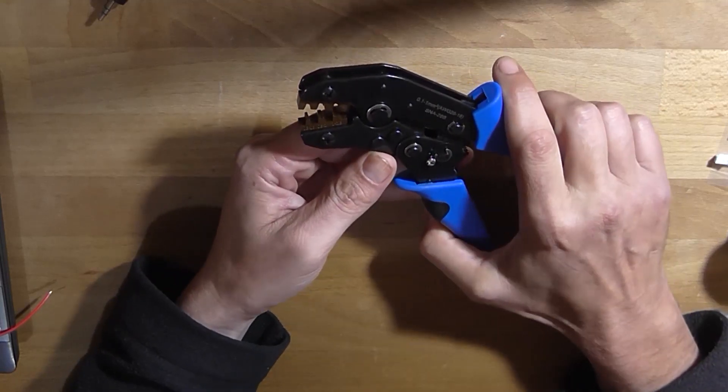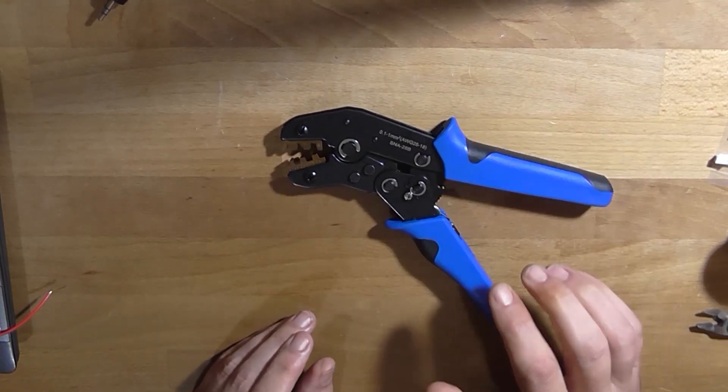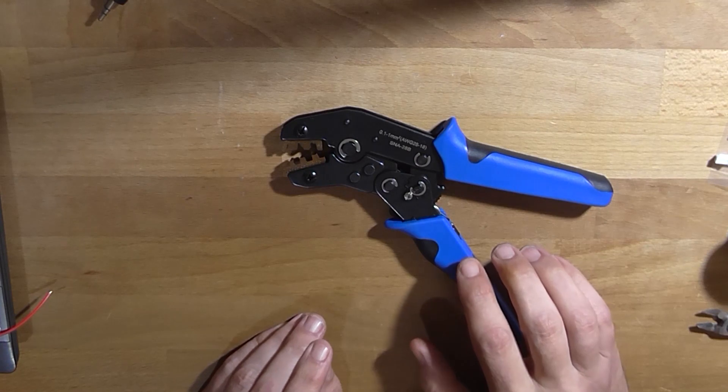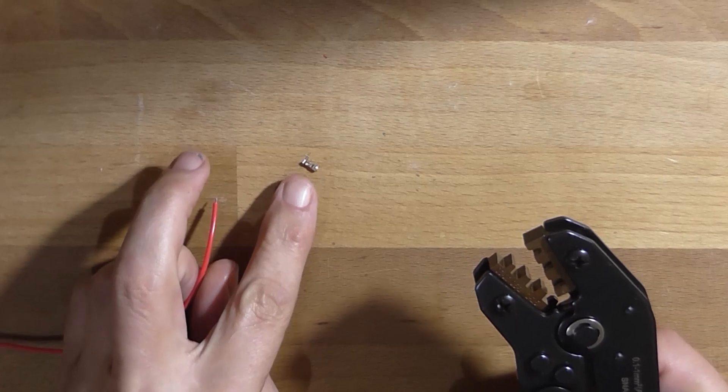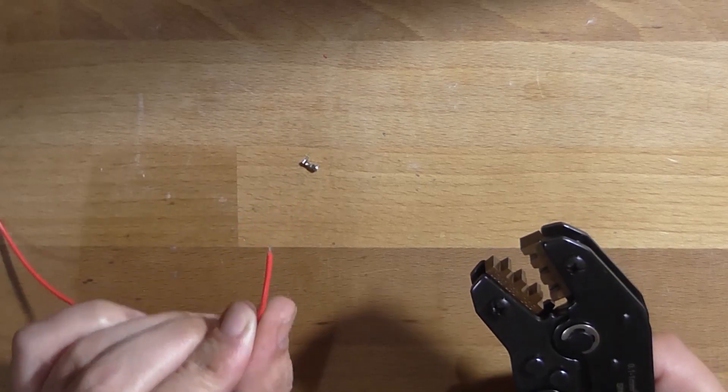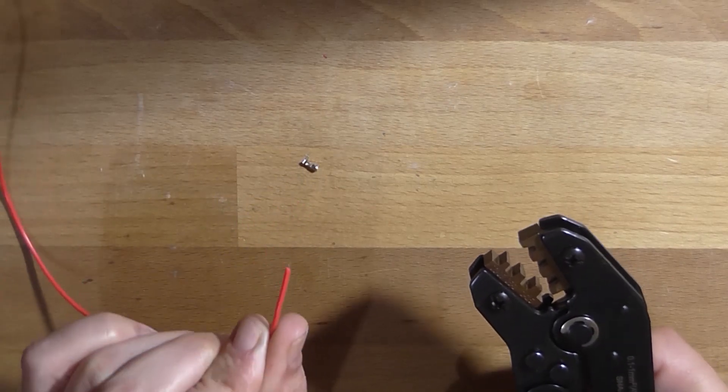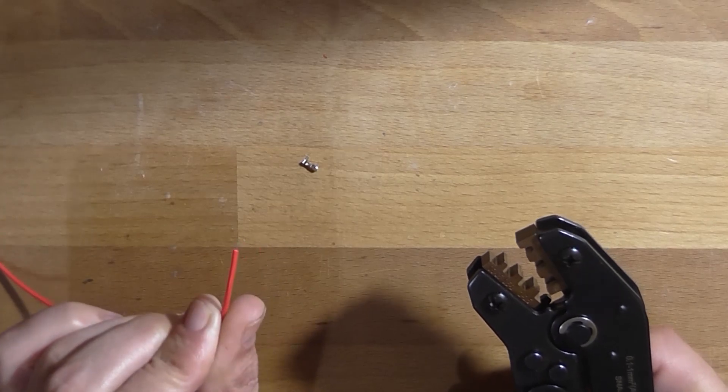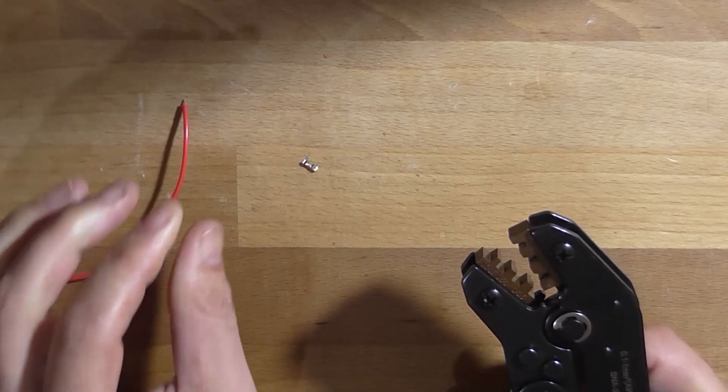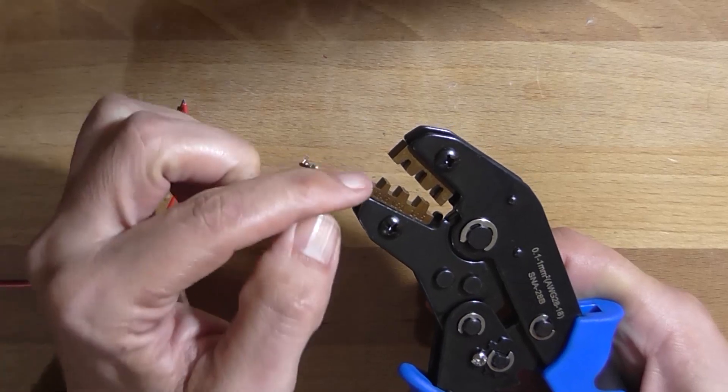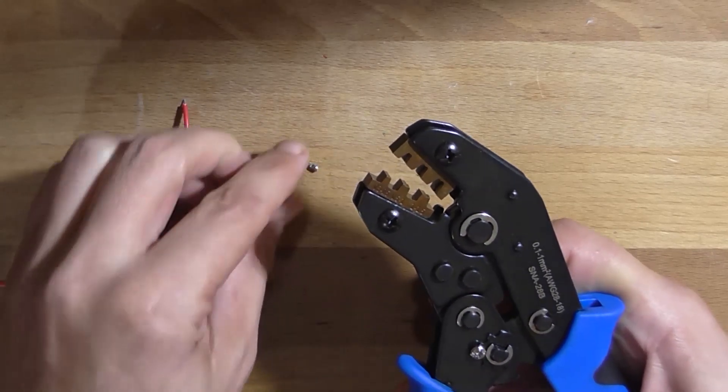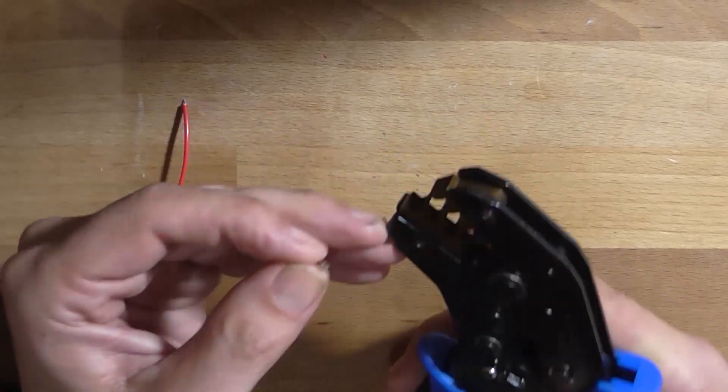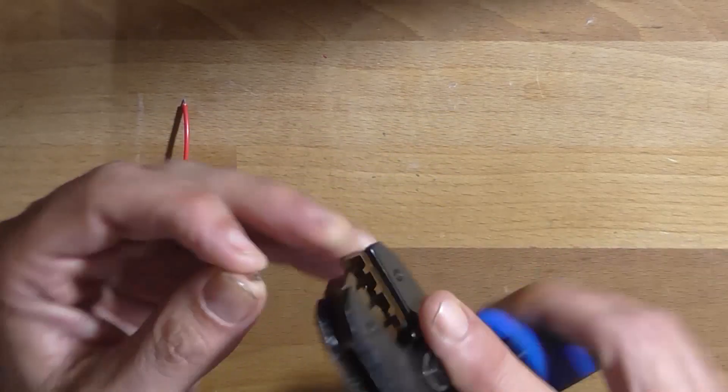All right, so what I need is a JST connector, the terminal itself, and a stripped bit of wire. So I've got a JST crimp here and I've stripped off on this red wire about an eighth of an inch or three millimeters. Now the JSTs would go in this first one, the 0.3 to 0.5, and you can't see anything that you have to do special here.